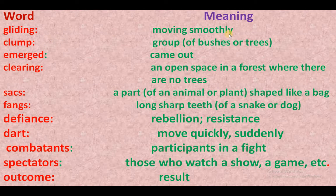Gliding — moving smoothly; dhire se move karna. Clump — group of bushes or trees; jhadiyon ya pedon ka jhund. Emerged — came out; bahar aana.